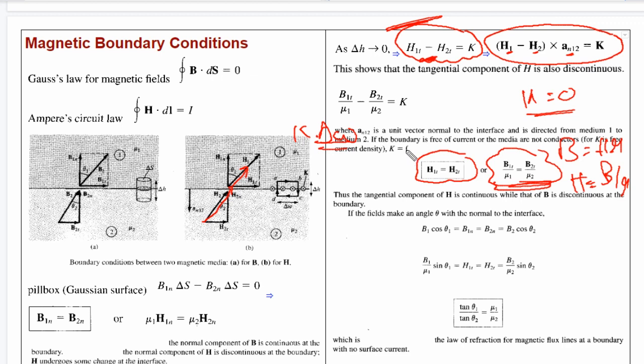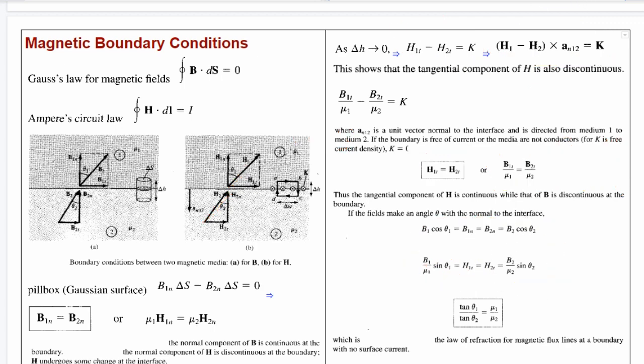In the second case, we have a current density free situation where the magnetic field intensity tangential component is continuous. The magnetic flux density tangential component is not continuous. From the Gaussian surface discussion and Amperian loop discussion, we can calculate the angle of reflection and refraction as tan theta 1 by tan theta 2 equals mu 1 by mu 2.